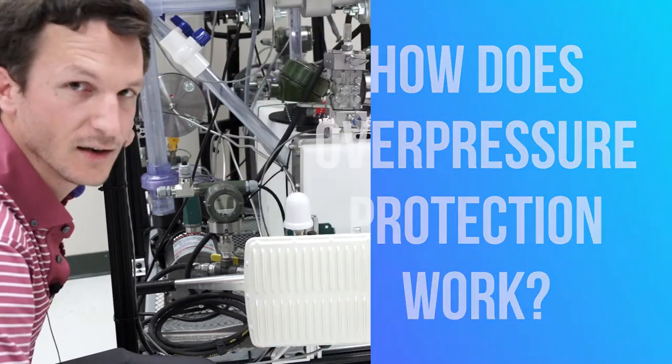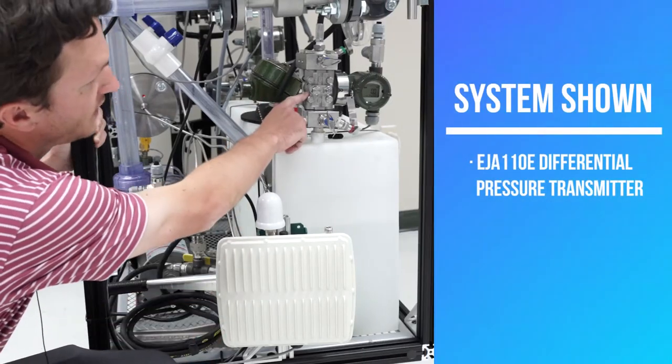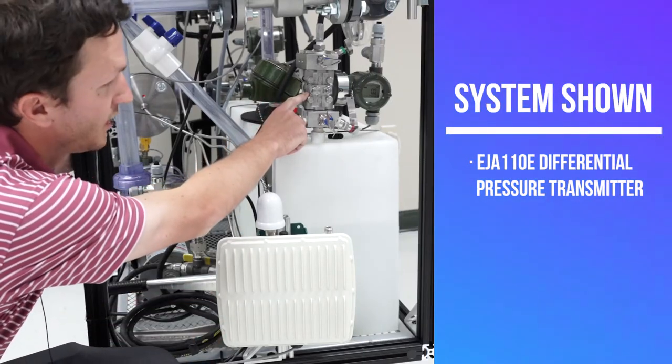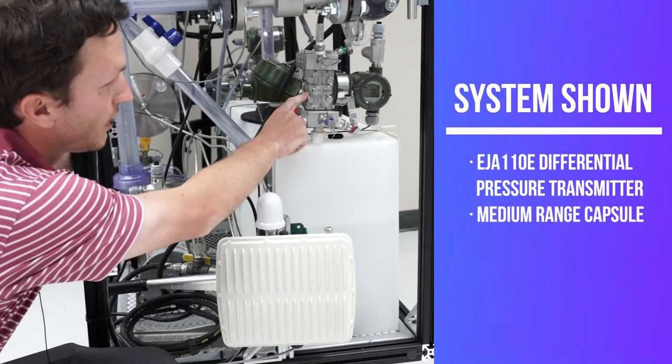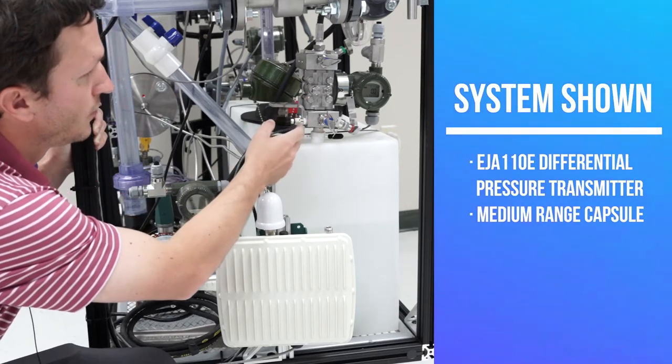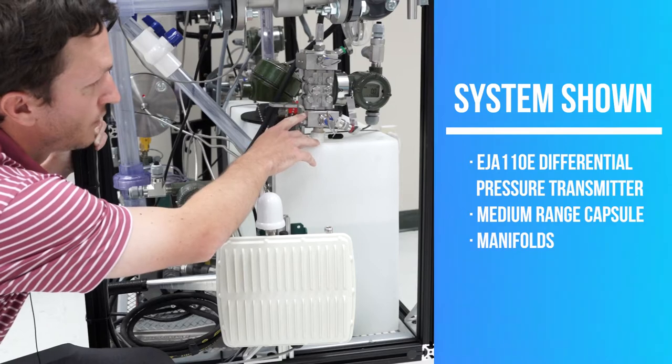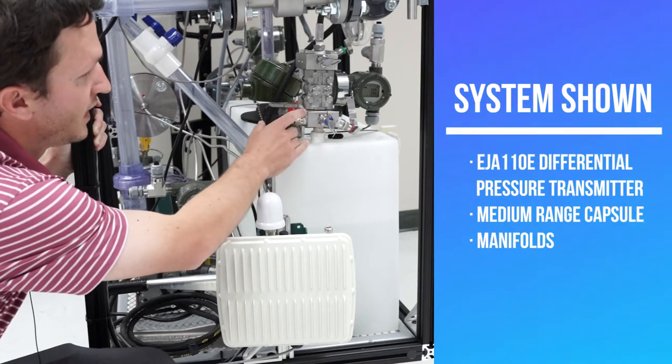So the system I've got here, I've got an EJA-110E, just a standard DP transmitter, a medium-range capsule, and then I've got it installed so that there's a series of manifolds so that we can isolate the transmitter.